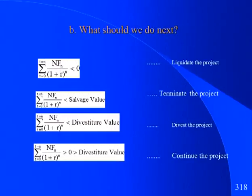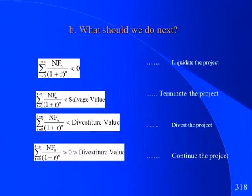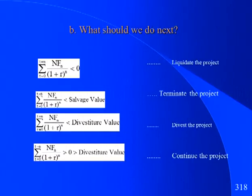The second part of the analysis is to me the more interesting one. You're two years into the project — what's already happened has happened. What should you do next? You have eight more years left. You can take the present value of those remaining cash flows, updated to reflect what you learned in the first two years. If this project has done so horribly that when you project out the remaining eight years they're all negative cash flows, the decision becomes simple: if the present value of remaining cash flows is less than zero, shut the project down and liquidate it.